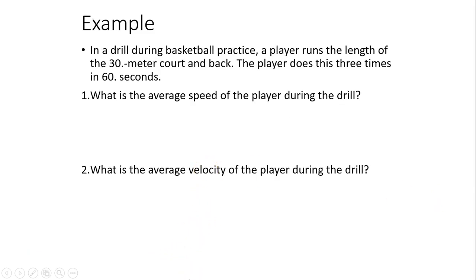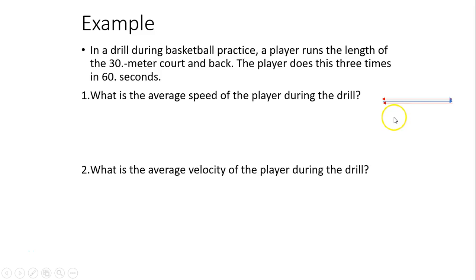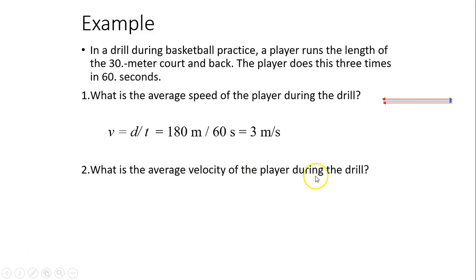In a drill during basketball practice, a player runs the length of a 30-meter court and back, doing this three times in 60 seconds. Each back-and-forth is 60 meters, so total distance is 180 meters in 60 seconds — average speed is 3 meters per second. For average velocity: the player starts and ends in the same place, so displacement is zero and average velocity is zero meters per second.